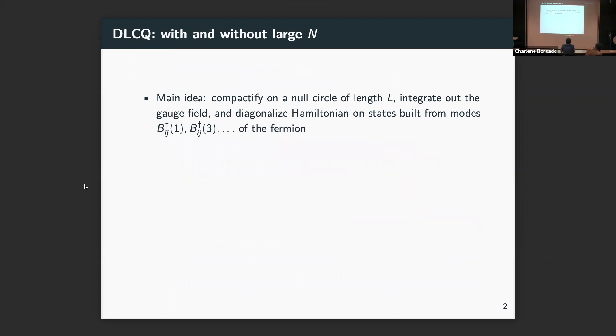Let me give a brief overview of DLCQ. The main idea is we take this two-dimensional gauge theory and then compactify a null direction to a length L. After doing that, we can integrate out the gauge field since we're in two dimensions, and we have an effective Hamiltonian for the fermion matter left over. We can construct gauge invariant states for these fermions out of momentum mode operators, these B dagger IJ operators that are modes of the adjoint fermion. What we'd like to do is enumerate all the double states we have and diagonalize this Hamiltonian. It's still an infinite problem at this point, but we can make it finite by fixing one of the two momenta, the momentum winding around the null circle.